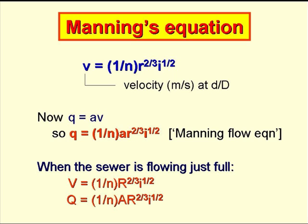The basic equation that we use is Manning's equation. This says that the velocity in meters per second at the proportional depth of flow d/D is equal to (1/N) × R^(2/3) × I^(1/2), where N is Manning's roughness coefficient, and I is the sewer gradient. Now we know that flow equals area times velocity, Q = AV, so that Manning's flow equation can be expressed as Q = (1/N) × a × R^(2/3) × I^(1/2).